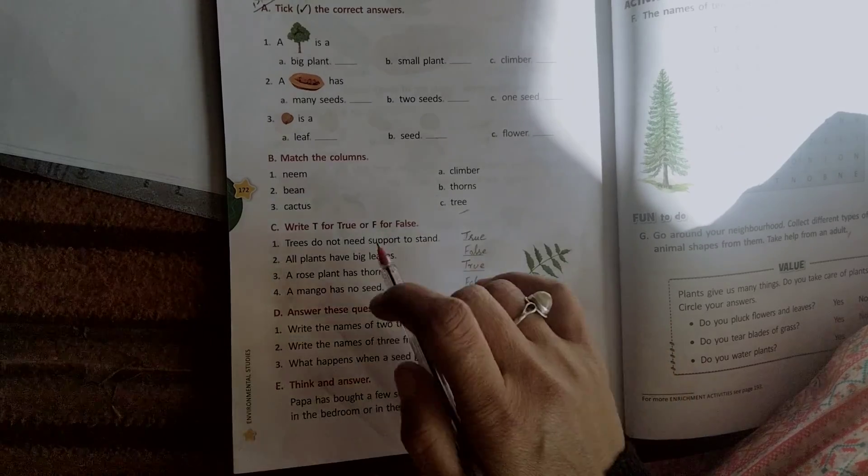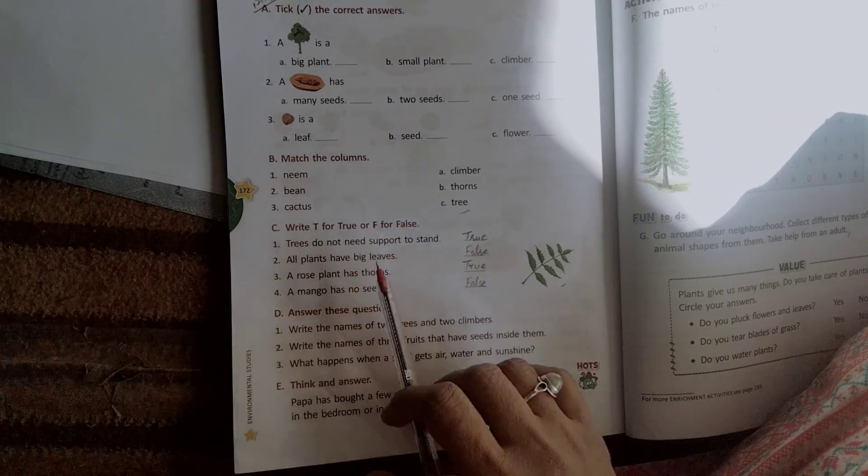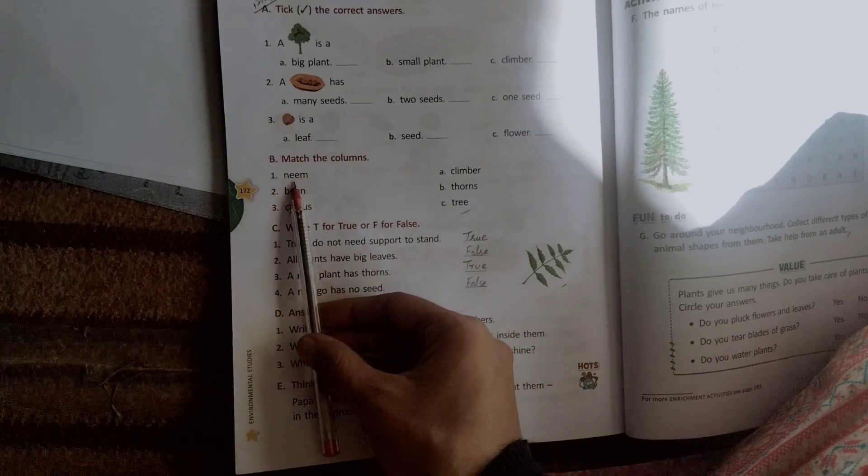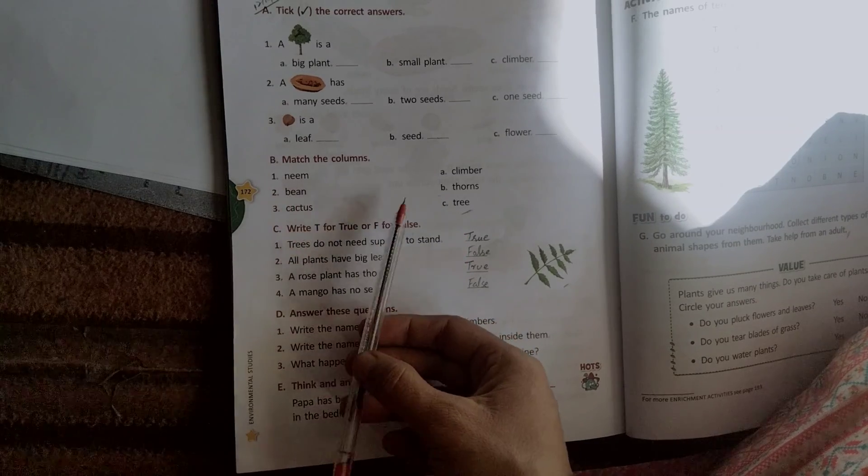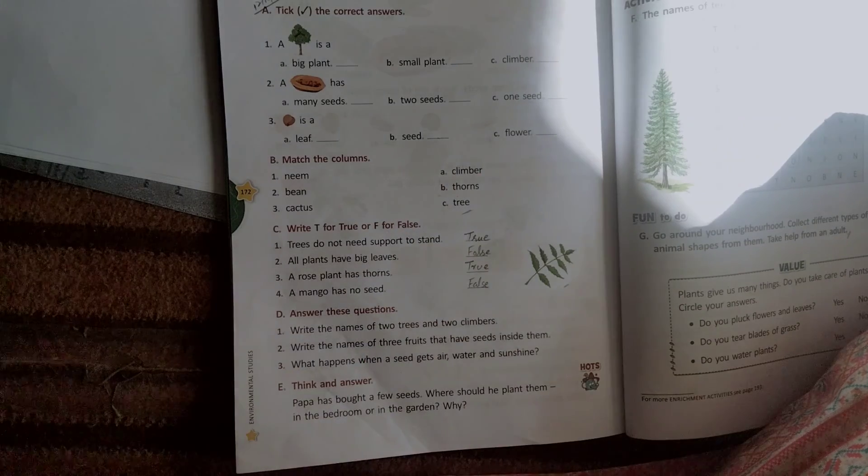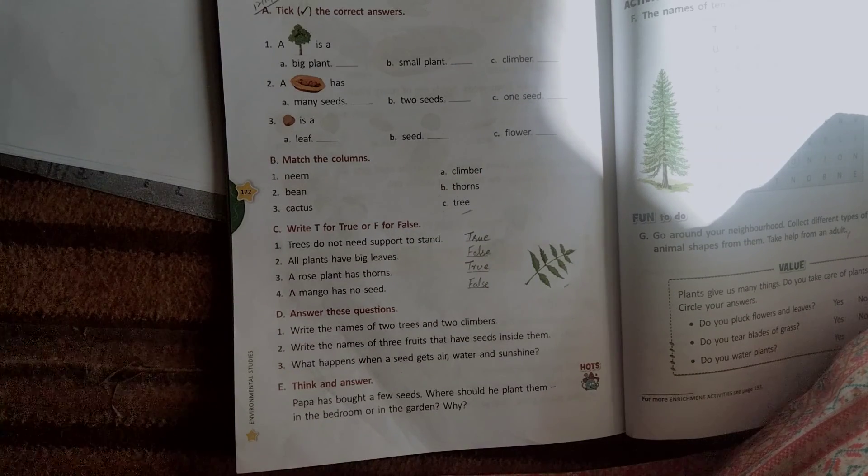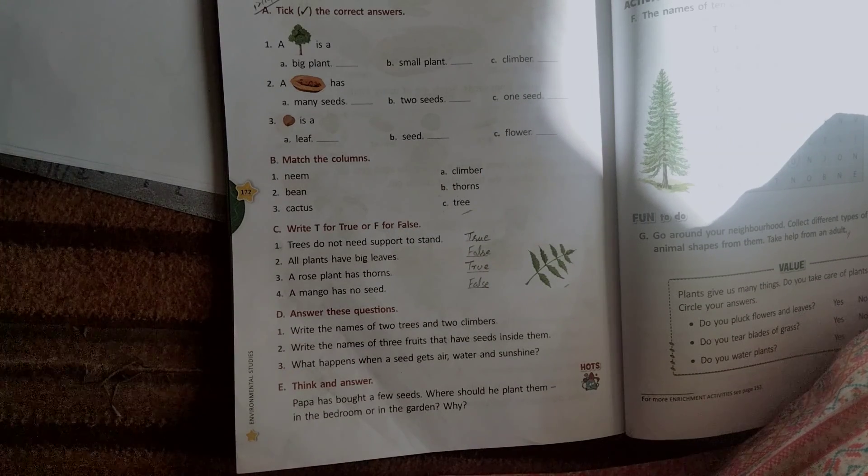B is match the column. First, Neem. What is it? Tree. Bean. What is it? Climber. Cactus. What is it? Thorn.